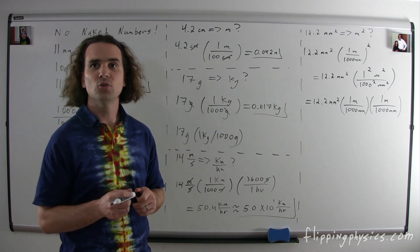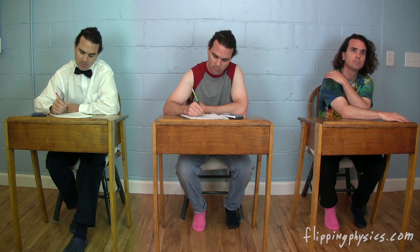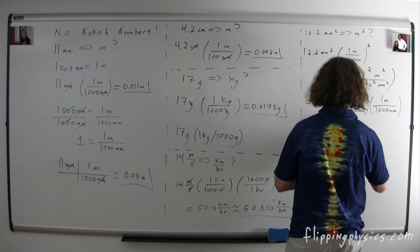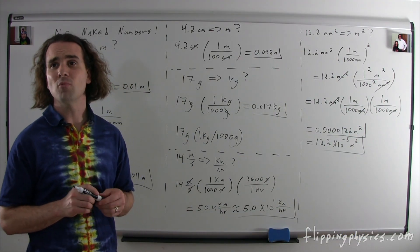Alright, Billy, what do we get as an answer then? Millimeters squared cancel out and we get 0.0000122 meters squared, which we could illustrate with scientific notation as 1.22 times 10 to the negative 5 meters squared. Great, let's do one more.